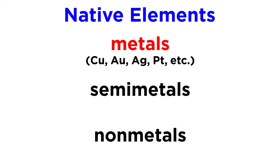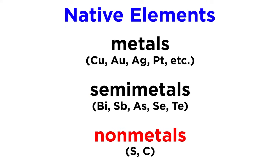Some examples of native metals are copper, gold, silver, and platinum. The native semimetals are bismuth, antimony, arsenic, selenium, and tellurium. And the only two native nonmetals are sulfur and carbon.